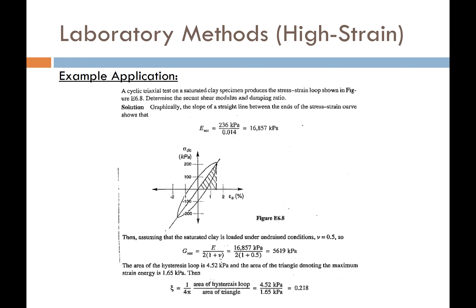Despite its limitations, we can use the cyclic triaxial test to measure the damping ratio. By performing one cyclic loading cycle and measuring the results, we can compute the soil's damping ratio. Of course, the damping ratio will change with each subsequent cycle as the soil degrades. There's a worked example in the presentation worth reviewing to understand how this calculation is done.